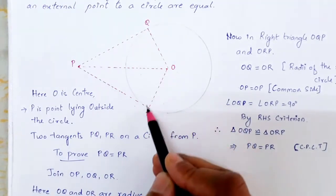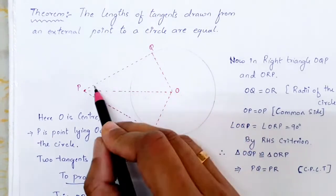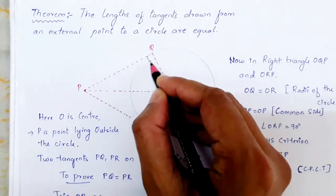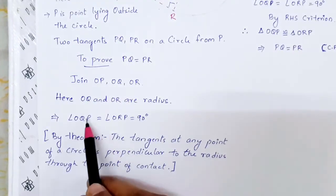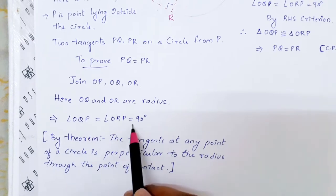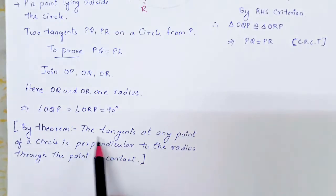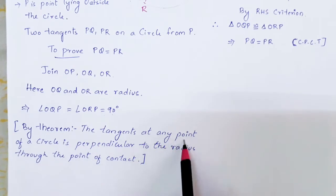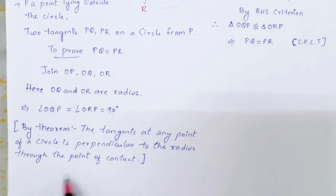Now we know that angle OQP is 90 degrees and also angle ORP is 90 degrees. Why are angle OQP and ORP 90 degrees? This comes from a theorem which states that the tangent at any point of a circle is perpendicular to the radius through the point of contact.